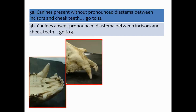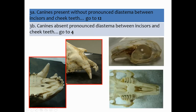Canines present without pronounced diastema between incisors and cheek teeth — go to 12. Canines absent, pronounced diastema between incisors and cheek teeth. This skull clearly has canines present. The other option would show a big gap — the diastema — with no canines, just front teeth. So this one is canines present without pronounced diastema, and we're going to 12.